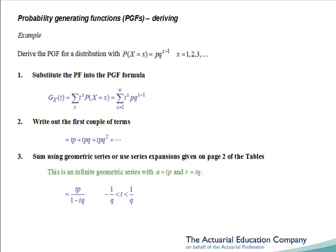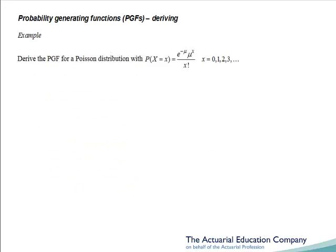Now let's look at applying this three-step method to a second, slightly messier example. We wish to derive the PGF for a Poisson distribution which has probability function of e to the minus mu times mu to the x over x factorial, defined for x equal to 0, 1, 2, 3 and so on.